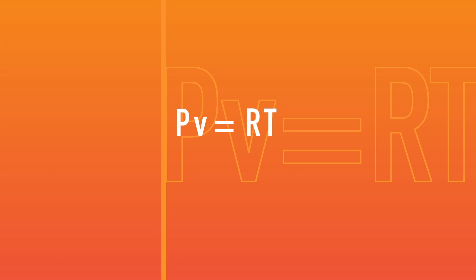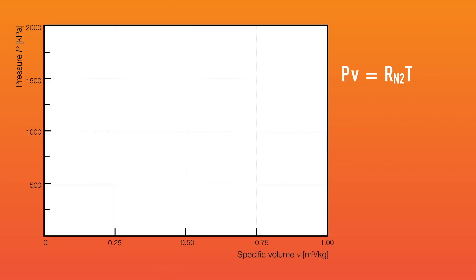This simple equation not only defines the state of the gas, but also allows us to understand the relationship between its properties — namely pressure, temperature, and specific volume. Let us explore this relationship for nitrogen gas. At typical conditions, nitrogen gas behaves like an ideal gas.